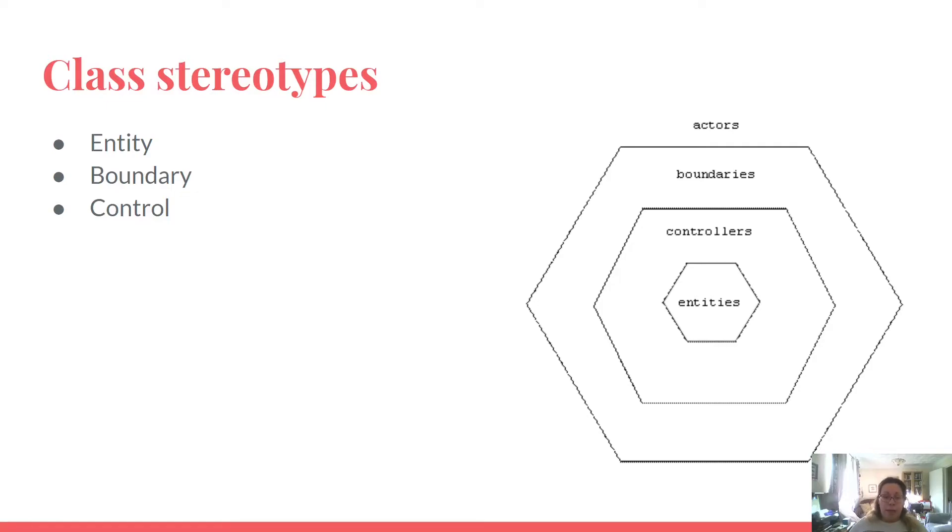There are three types of stereotypes: entity, boundary, and control. We will be talking about stereotypes from the perspective of a class stereotype.